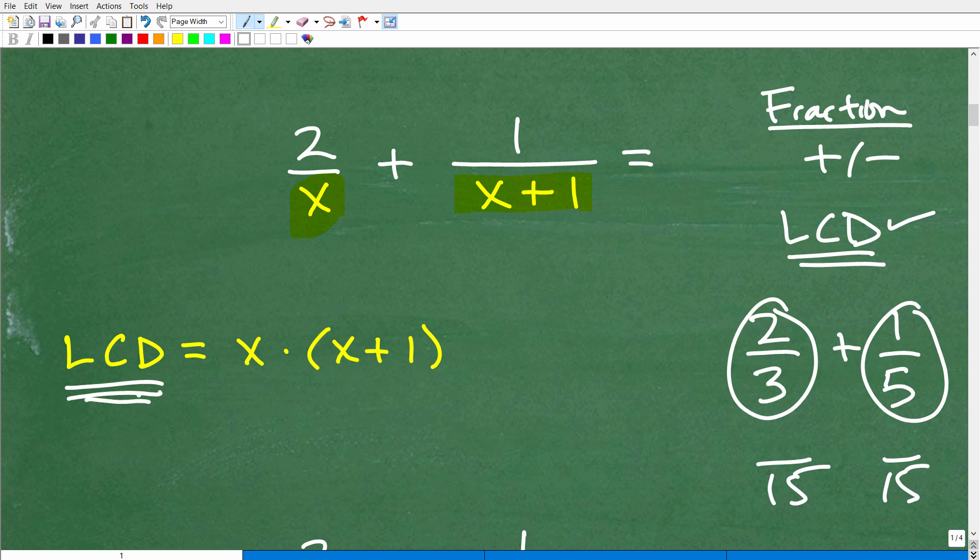Now finding the LCD of rational expressions, this is like a full lesson in and of itself. But I'll just tell you very briefly what you need to do is you need to multiply the prime factors of each of these denominators. In this case, x is all by itself and here x + 1 is all by itself. This is the only factor here, this is the only factor here. So we need to find the product of all the prime factors of the denominators. We get the LCD.